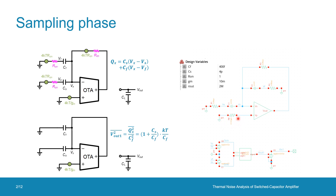The OTA noise PSD is the expected 4kT/gm. In this test bench, I want to calculate the noise charge of the input cap QCin and feedback cap QCfb, sum them together, and then divide by Cf to obtain the output noise voltage Vout1.